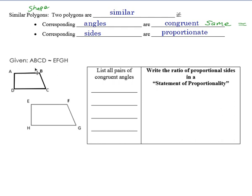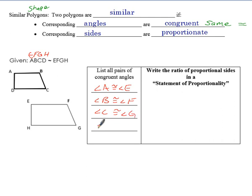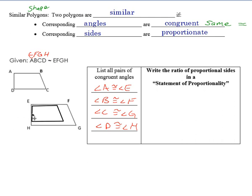Given that ABC is similar to EFGH, we're going to list all the pairs of congruent angles. Just like we did with congruency, we can stack the figures on top of each other to see what matches with what. So angle A is congruent to angle E, angle B is congruent to angle F, C is congruent to G, and D is congruent to angle H. Notice the side lengths are not the same — they're clearly different — but I can still match the angles up.